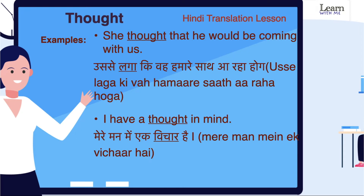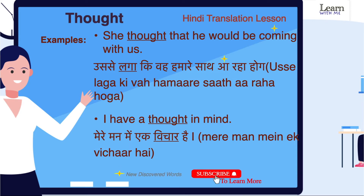Now, we will understand two examples. Ab hum ise udaharan ke dwara samjhenge. She thought that he would be coming with us. Usse laga ki woh hamare saath aa raha hoga. I have a thought in mind. Mere man mein ek vichar hai.